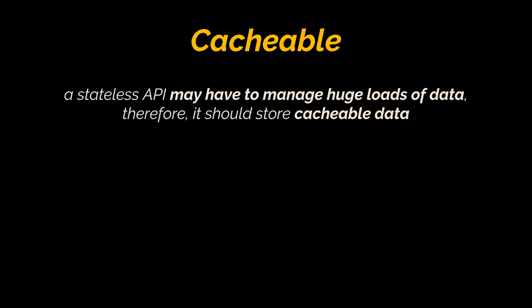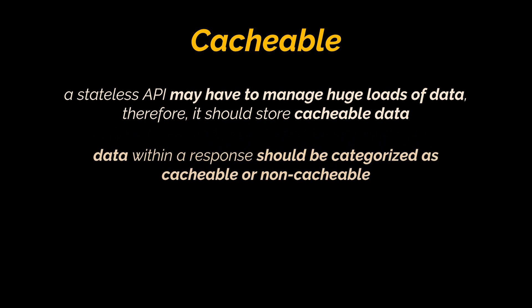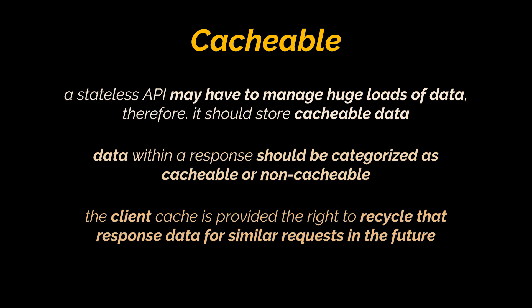Additionally, APIs should be cacheable. A stateless API may have to manage huge loads of calls and data, therefore a REST API design should store cacheable data. Data within a response should be categorized as cacheable or non-cacheable. If a response is cacheable, the client cache is provided the right to reuse that response data for similar requests in the future.